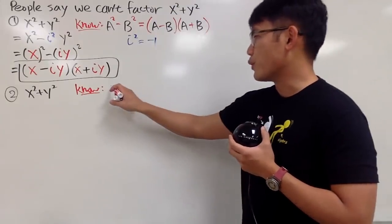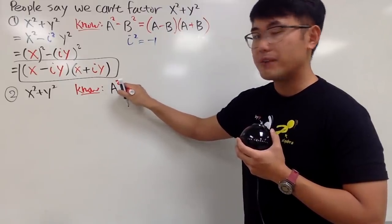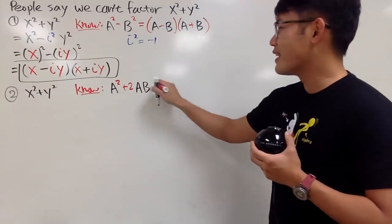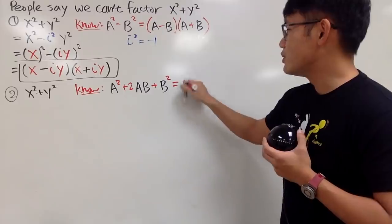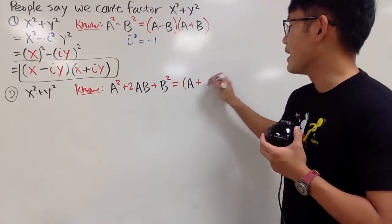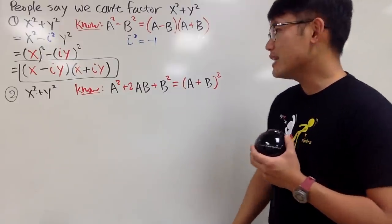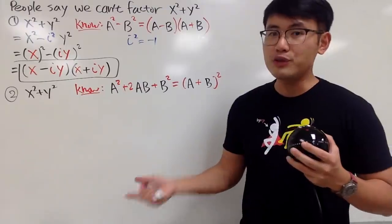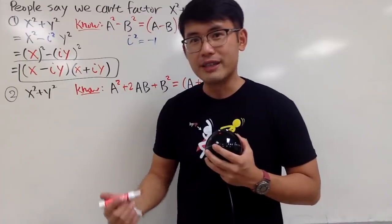Suppose today we have a squared, and if we have plus 2ab, this right here, after we add a b squared after that, we know this is just nicely equal to a plus b squared. Very nice. And with that said, as we can see, this right here is a squared, and this right here is a b squared pretty much. And now, we just have to put the middle term right here.